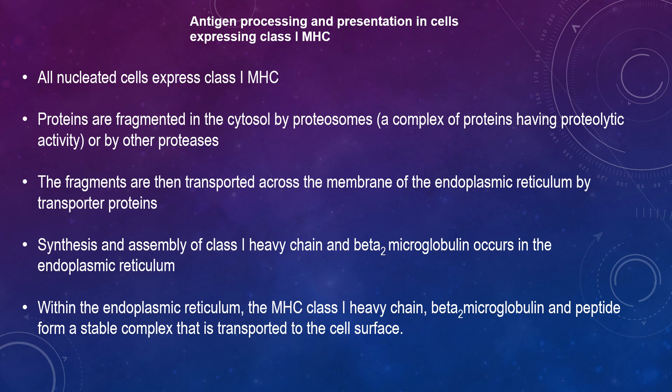The production and assembly of the class 1 heavy chain and beta-2 microglobulin occurs in the endoplasmic reticulum. Within the endoplasmic reticulum, the MHC class 1 heavy chain, beta-2 microglobulin, and peptide form a stable complex that is transported to the cell surface.